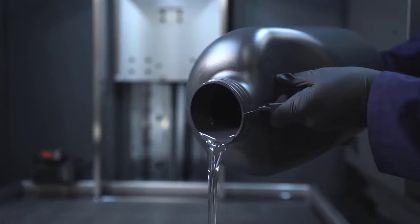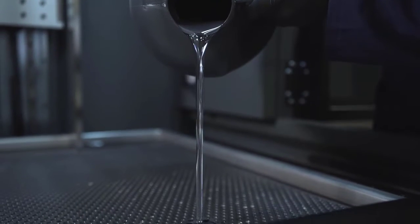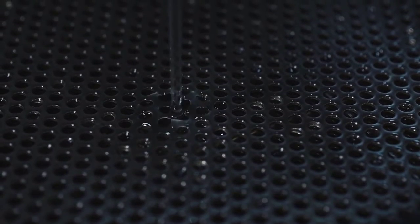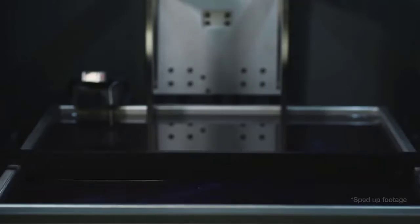In preparation for a build, resin is poured into a vat, and at the start of the build the NEO's laser scanning system will draw a layer over the whole platform.